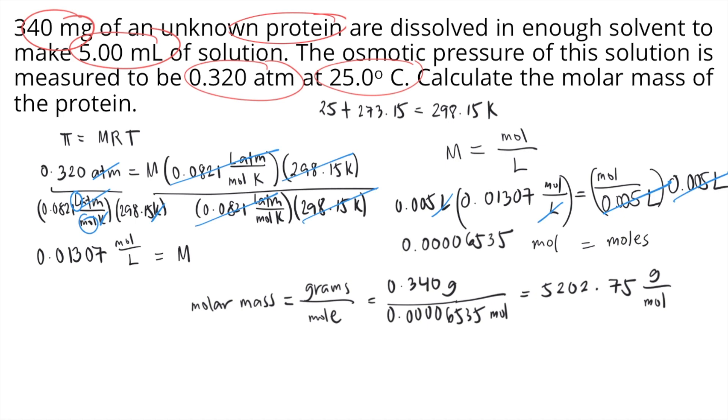It's common for proteins to have big molar masses. The molar mass is 5,202.75 grams per mole. If you want to express it in proper significant figures, it should be in 3 significant figures. And that is 5.20 times 10 to the 3 grams per mole. This is the answer to the question.